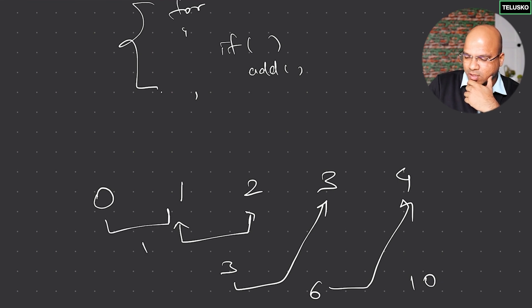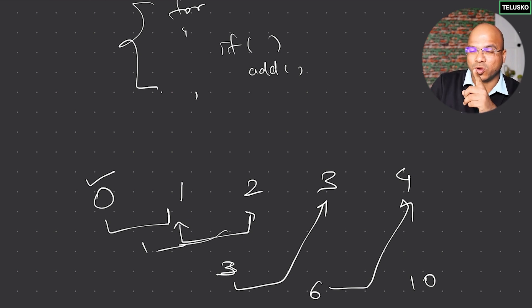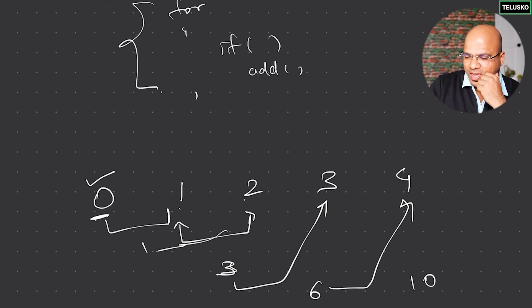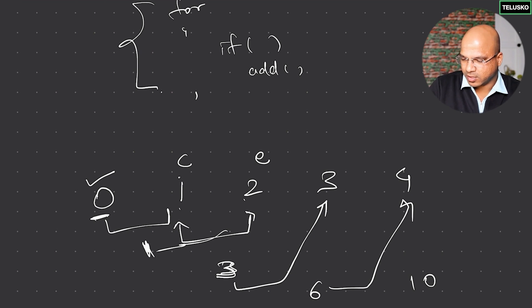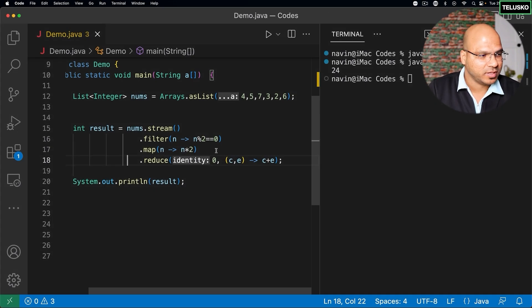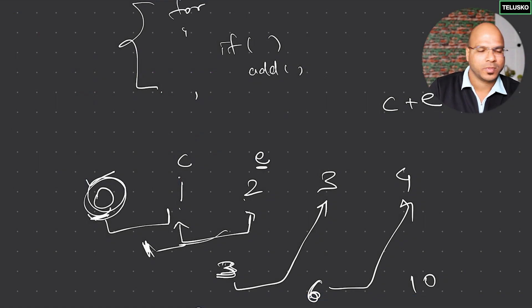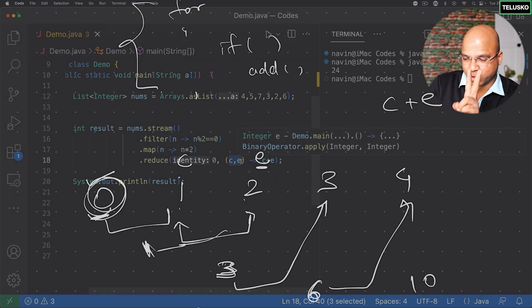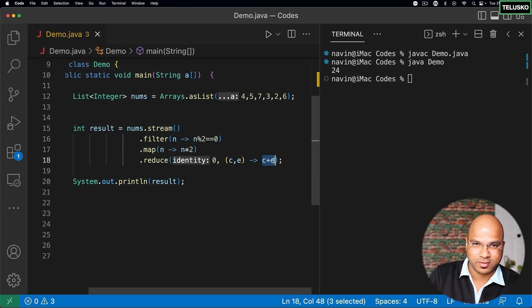Or you can start with zero: zero plus one is one, one plus two is three, and so on. You start with an initial value — remember when we created intSum we assigned zero, that is your initial value. Every time you add two values. Think of c as the carry — this one, three, and six are carries — and e as the current element. What you do is c plus e. That's it. The zero is the initial value, c and e are the two variables, and c plus e is the operation. That simple.